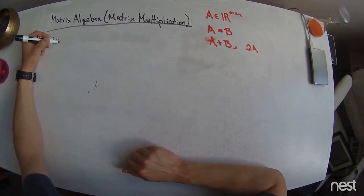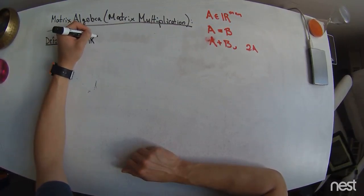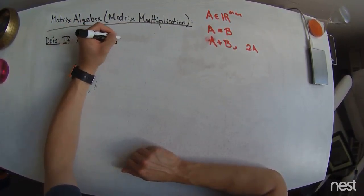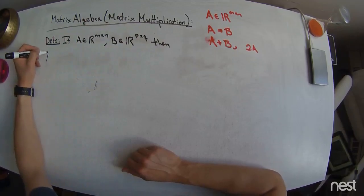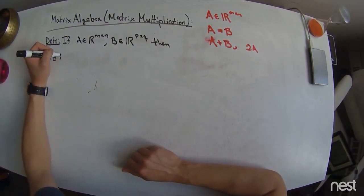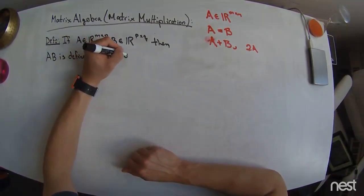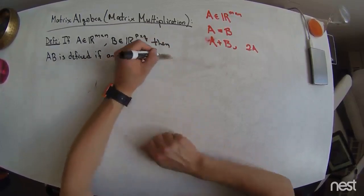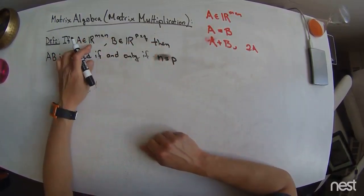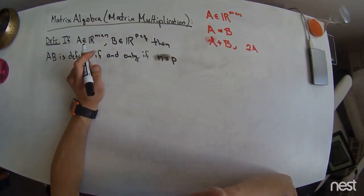So we start with a definition which says that if the matrix A is M rows by N columns, and the matrix B is P rows by Q columns, then A times B is defined if and only if N is equal to P, so the number of columns in the A matrix is equal to the number of rows in the B matrix. We'll see why that is in a second.